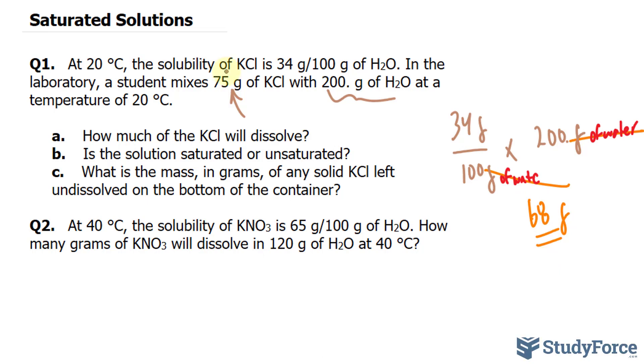68 grams of potassium chloride can dissolve in 200 grams of water, except here we have 75 grams. So it's exceeded by 7 grams. How much of the calcium chloride will dissolve? Well, only 68 grams will dissolve, leaving you with 7 that won't.